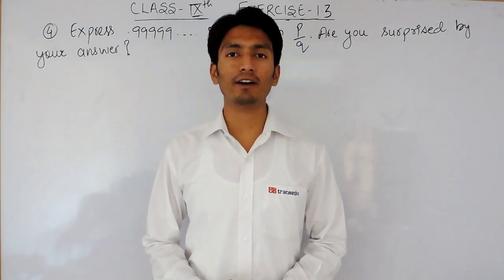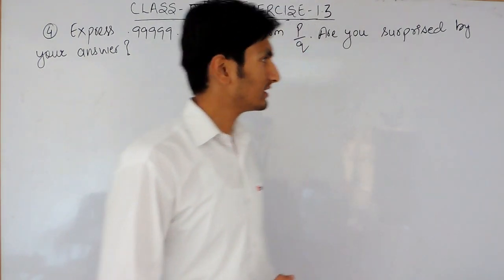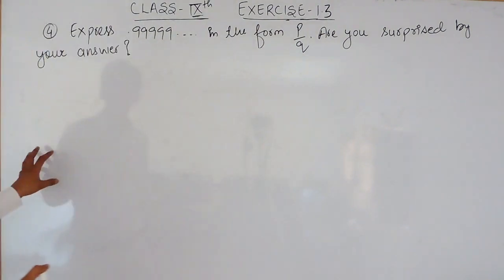Hello everyone, we are from True Maths and in this video we are going to solve the fourth question of exercise 1.3. The question says you have to express 0.999999 and so on in the form of P upon Q. Are you surprised by your answer?